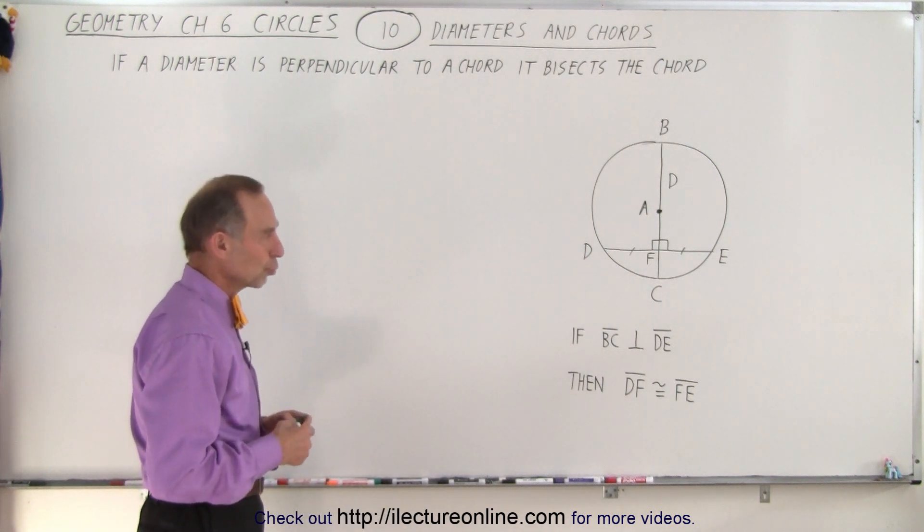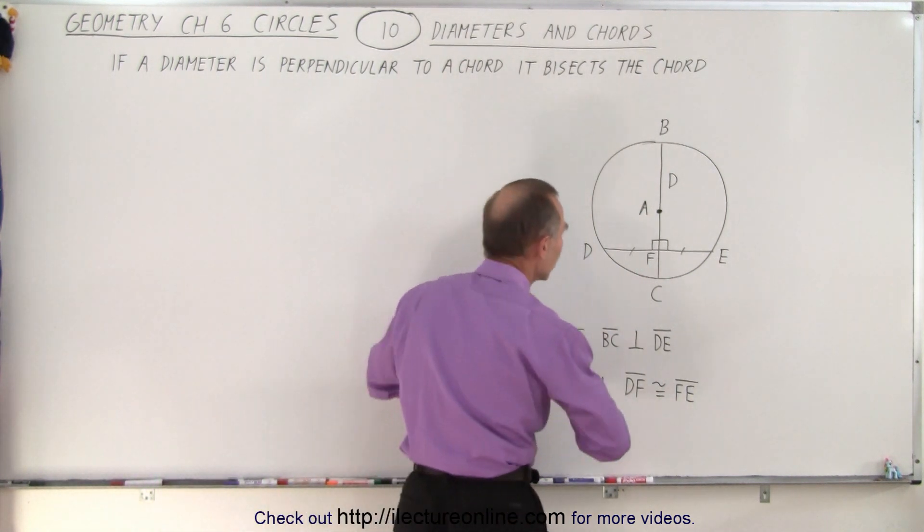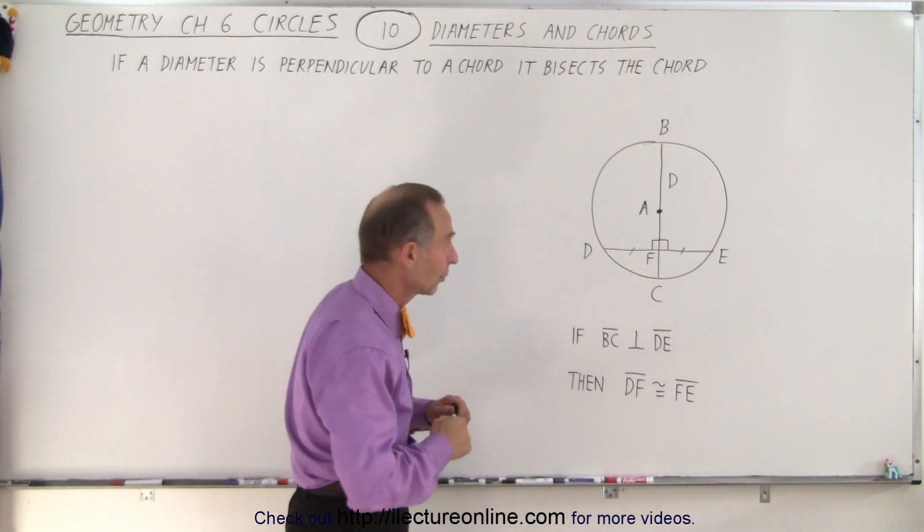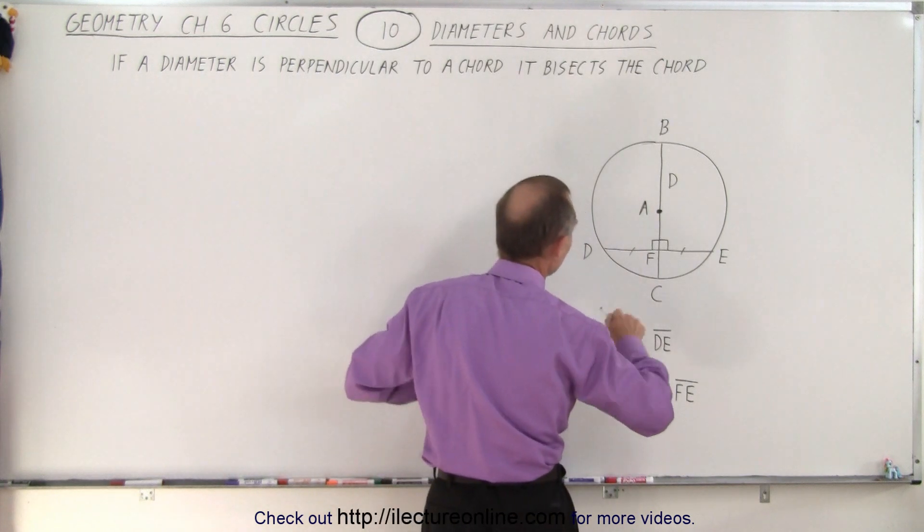How do we know that's true? Well, let's see here. Notice that this requires these two angles to be 90 degrees, right angles. And then if we draw a line from A to D